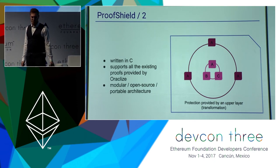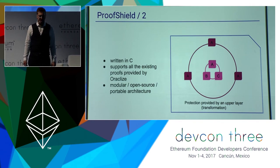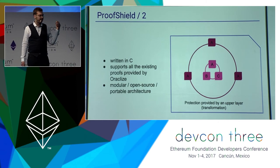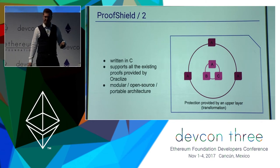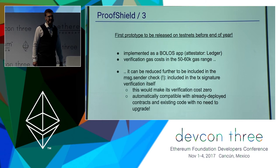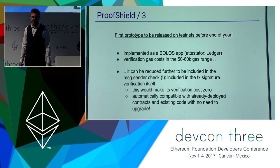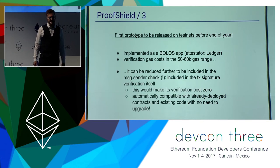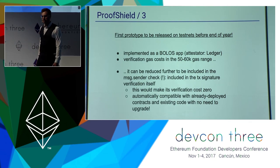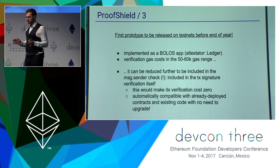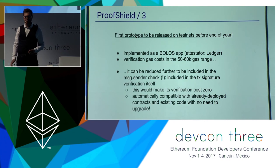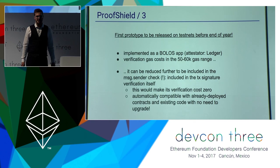The Proof Shield is written in C with a quite modular and portable architecture — it can run in different contexts. It will be open source very soon and supports all existing proofs provided by Oraclize. You could potentially use, for example, a Ledger device to run the Proof Shield to verify an Android proof, though that opens an additional trust line, so the optimal case is using exactly the same technology. The first prototype will be released on testnets before the end of the year, with the first implementation as a Ledger Nano S app. Verification costs are again in the 50,000 to 60,000 gas range, and can be reduced further — in version 2 of the Proof Shield, the transaction signature itself can serve as the verification step, reducing proof shield verification cost to essentially zero, making it compatible with already-deployed contracts.